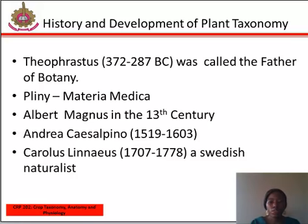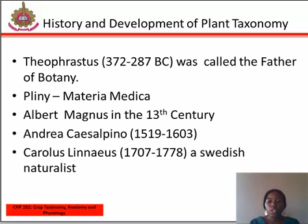Andrea Cesalpino, between the years 1519 and 1603, also classified plants on the character of their habits — including trees, shrubs, and herbs — but also took into account the characters of the ovary, fruits, and seed. He became famous for his book De Plantis in six volumes, the first of which contained his principles of classification.